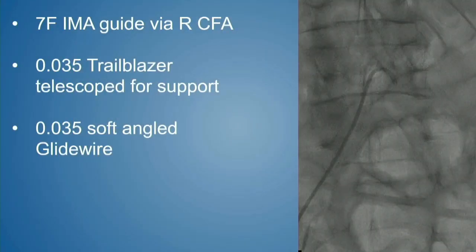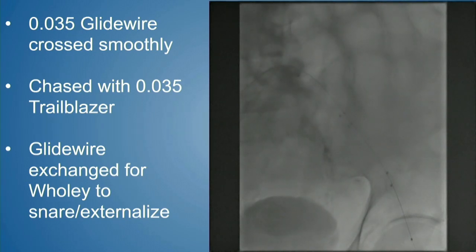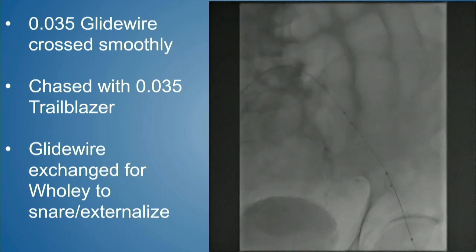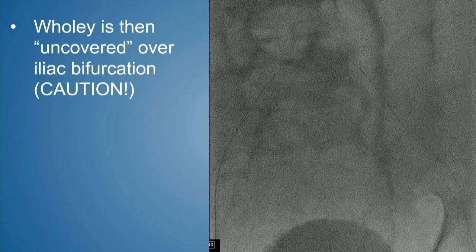Having that little beak, even without sheath support coming over, we decided to try crossing up and over from the contralateral iliac limb. We placed a 7-French IMA coronary guide via the right CFA, chased it with a 0.035 Trailblazer, and brought a 0.035 soft angled glide wire directly into that beak. Thankfully the wire passed smoothly — so smoothly we could chase it with a 0.035 Trailblazer. We then had a Trailblazer from the left leg and one up and around from the right leg, then exchanged for a Wholey wire and externalized it to create a strong platform for working up and over.